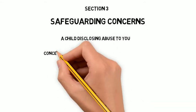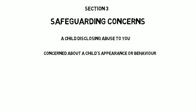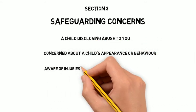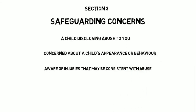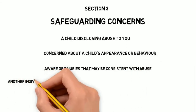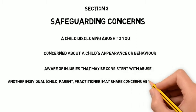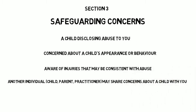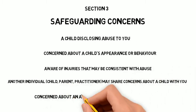For example, a child disclosing abuse to you. You may become concerned about a child's appearance or behaviour. You may become aware of injuries that may be consistent with abuse. Another individual, child parent or practitioner, may share concerns with you about a child. You may become concerned about an adult's behaviour towards a child.